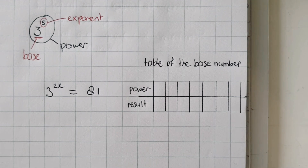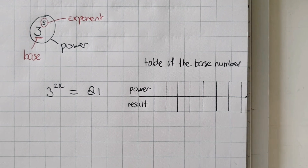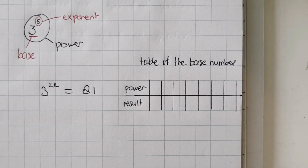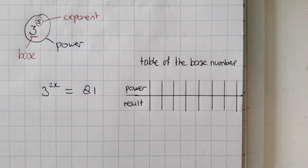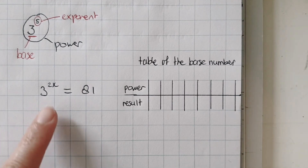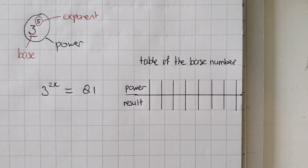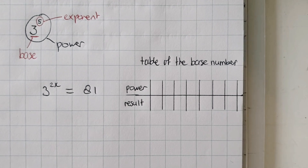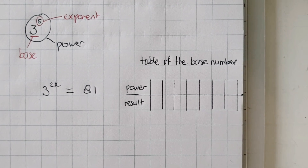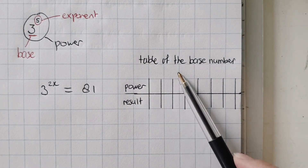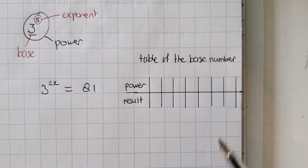Let me start with an easy example. 3 to the power of 2x equals 81. At first, you have to determine if this is an exponential equation. Is the letter in the exponent of this power? Yes. So then I'm going to handle this equation as an exponential equation. You have to look at the base. The base is 3, and then you have to make a table of the base number.